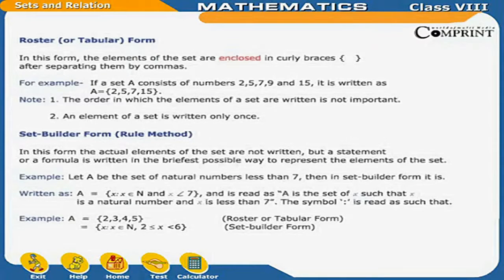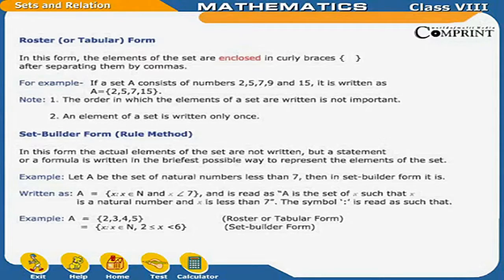Roster or tabular form: in this form, the elements of the set are enclosed in curly braces, separated by commas. For example, if a set A consists of numbers 2, 5, 7, 9 and 15, it is written as A = {2, 5, 7, 9, 15}. Note: (1) The order in which the elements of a set are written is not important. (2) An element of a set is written only once.